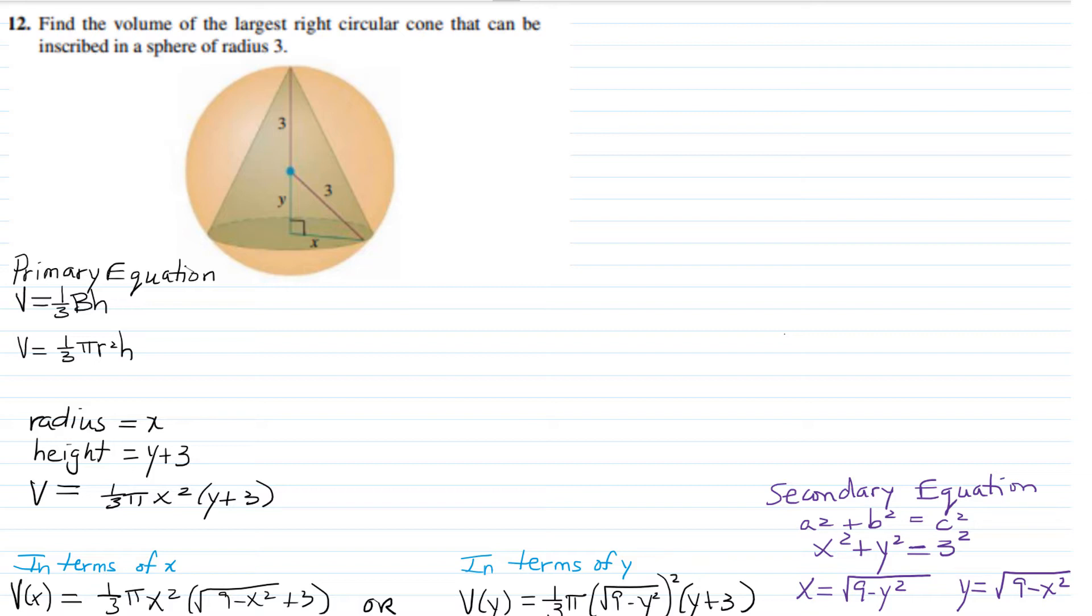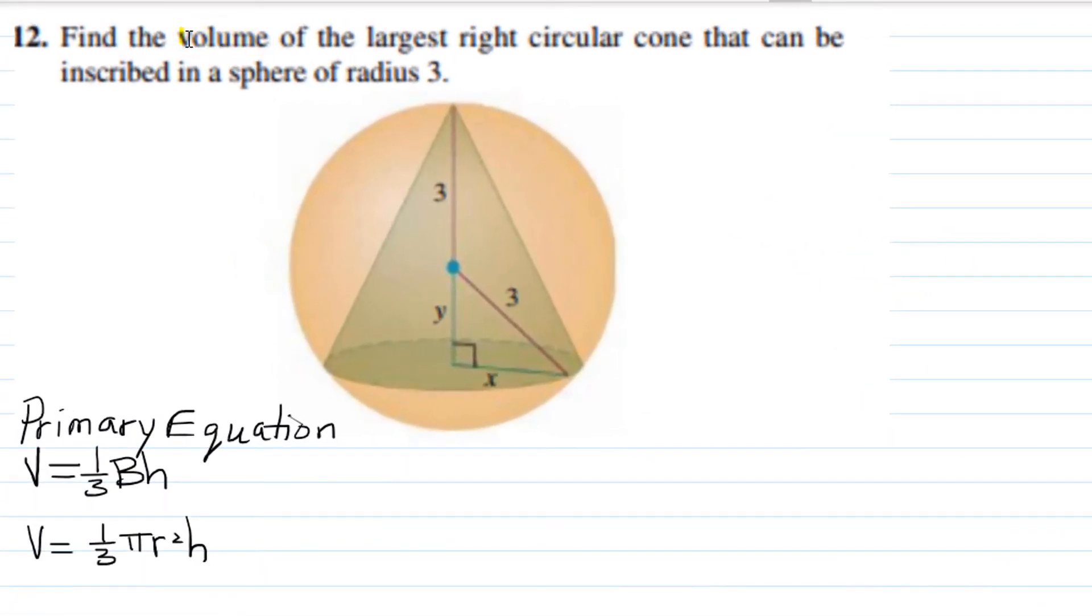The first thing we want to do in an optimization problem is identify the quantity that's being maximized or minimized. In this case, we're maximizing volume because we need to find the largest right circular cone. This gives us our primary equation: the volume of a right circular cone, which is one-third the area of the base times the height.